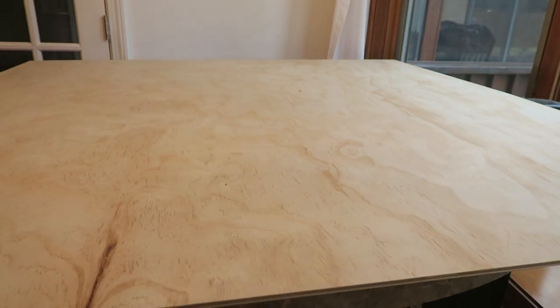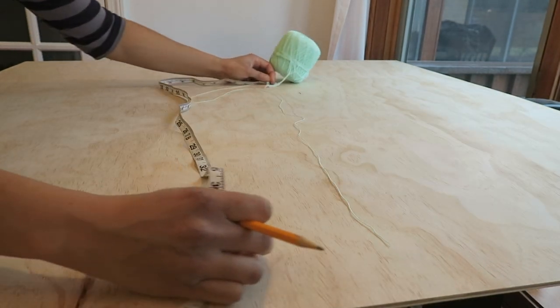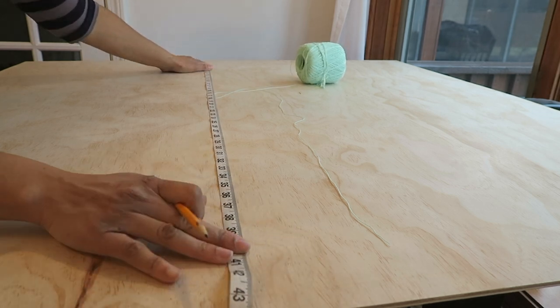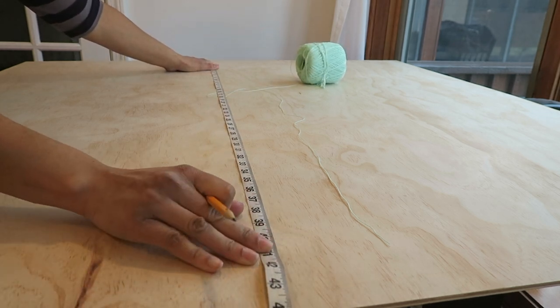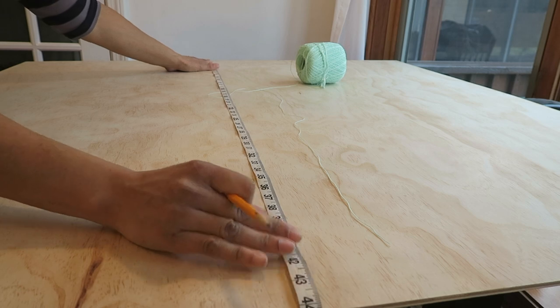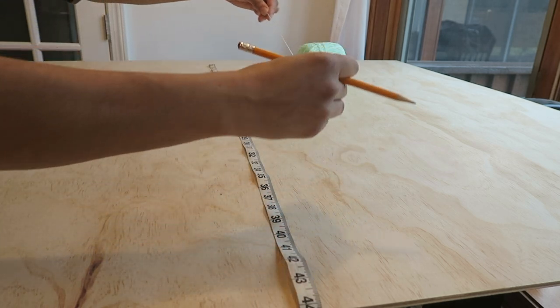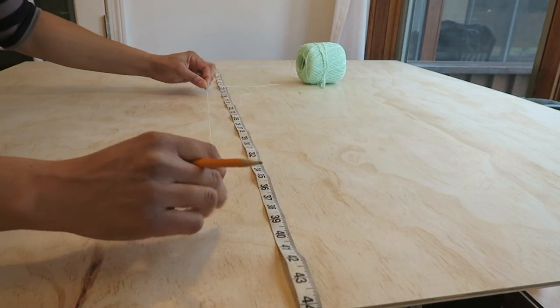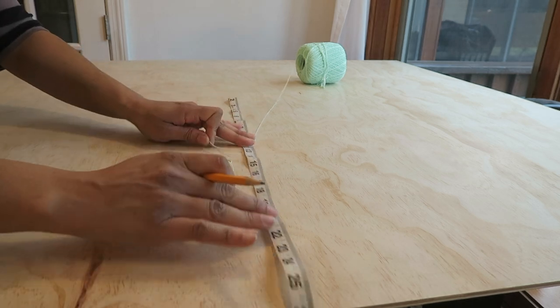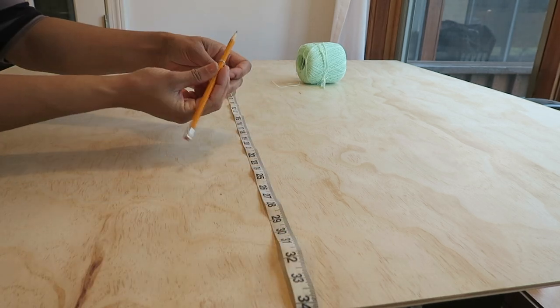I'm using this very thin piece of plywood. I want a 40 inch diameter circle. I'm pretty sure that's what I'm looking for. So in order to do that, I'm going to measure this string out at 20 inches and tie it to this pencil.